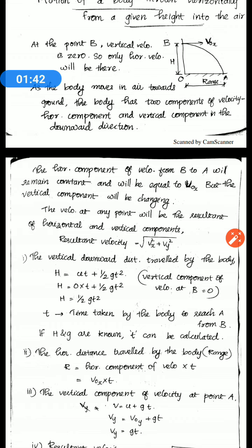In this case, acceleration due to gravity acts downward. We have an initial vertical velocity of 0, so we can write: h is equal to half g t squared, where t is the total time taken by the body to reach point A from point B.